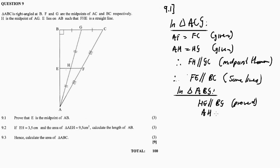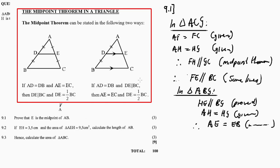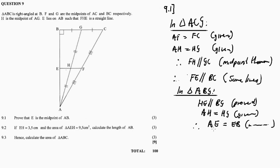It is also given that AH equals HG. Therefore, by the midpoint theorem — the second scenario — AE equals EB. This proves that E is the midpoint of AB. That completes question 9.1.